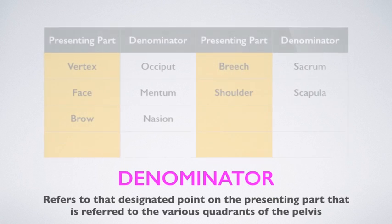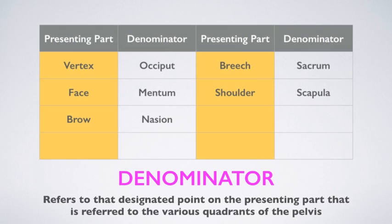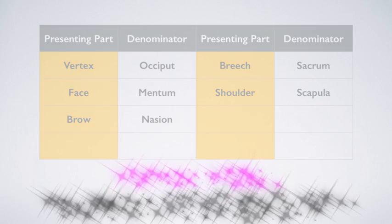Denominator refers to the designated point of the presenting part that is referred to the various coordinates of the pelvis. In vertex, the denominator is the occiput; in face it is the mentum; and in brow it is the nasion, or root of the nose. In breech, it is the sacrum, whereas in shoulder presentation it is the scapula.